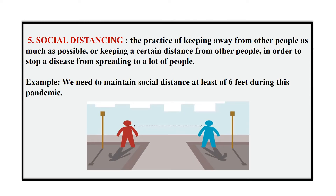Fifth one: social distancing. The practice of keeping away from other people as much as possible, or keeping a certain distance from other people in order to stop a disease from spreading to a lot of people. Example: we need to maintain social distance of at least 6 feet during this pandemic.